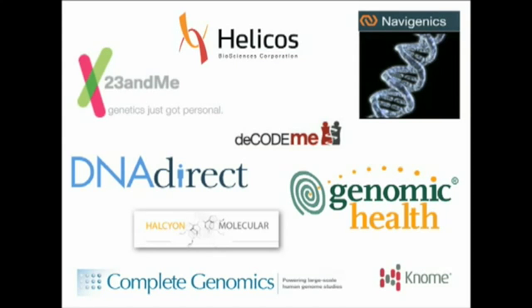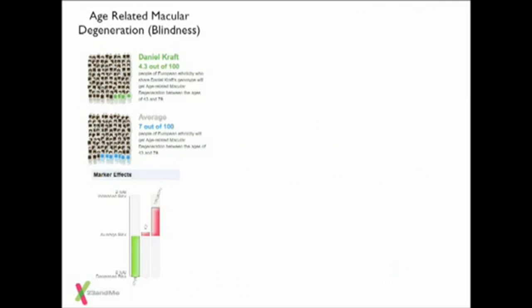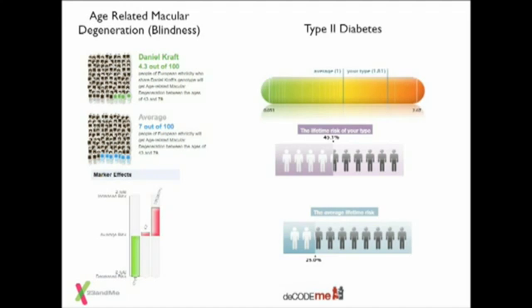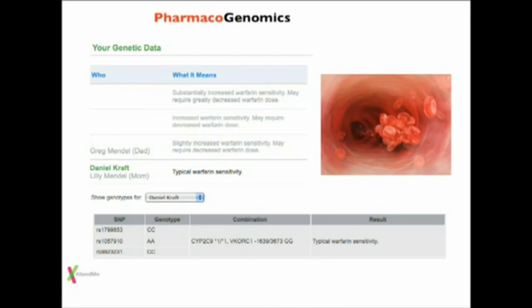Soon we'll have millions of these tests available, and that's when it gets interesting when we start to crowdsource that information and enter the era of true personalized medicine — the right drug for the right person at the right time, instead of the same blockbuster drug medications for everybody. My data from 23andMe indicates I've got about average risk for developing macular degeneration. But if I upload that same data to Decode Me, I can look at my risk for type 2 diabetes — I'm at almost twice the risk. Leveraging pharmacogenetics — how my genes modulate what my drugs do and what doses I need — is going to become increasingly important.